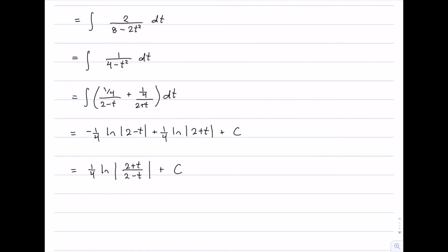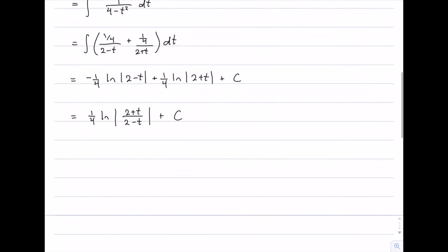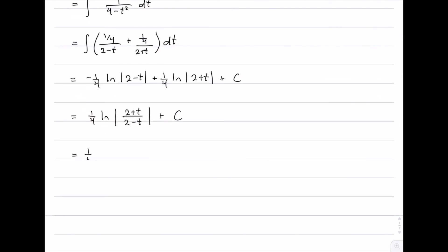But we're not done here because this integral, this answer, is given in terms of t. We have to substitute back in terms of x. So that would be a quarter log of 2 plus tan of x on 2 divided by 2 minus tan of x on 2 plus C.